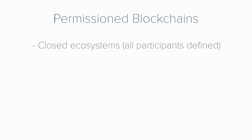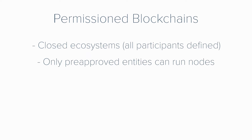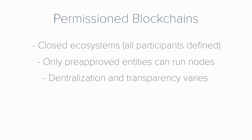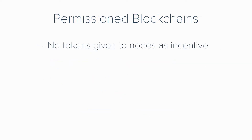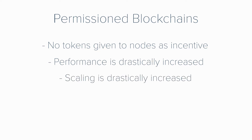Now permissioned blockchains, also known as private or centralized. Permissioned blockchains are closed ecosystems where all participants are well defined. Only pre-approved entities can run nodes. The degrees of decentralization and transparency are completely up to the company or companies running and configuring the blockchain. There's no anonymity. It does not require mining to validate transactions or execute smart contracts. It does not require a crypto-economic incentive or tokens for those running nodes. And consensus mechanisms are computationally inexpensive.